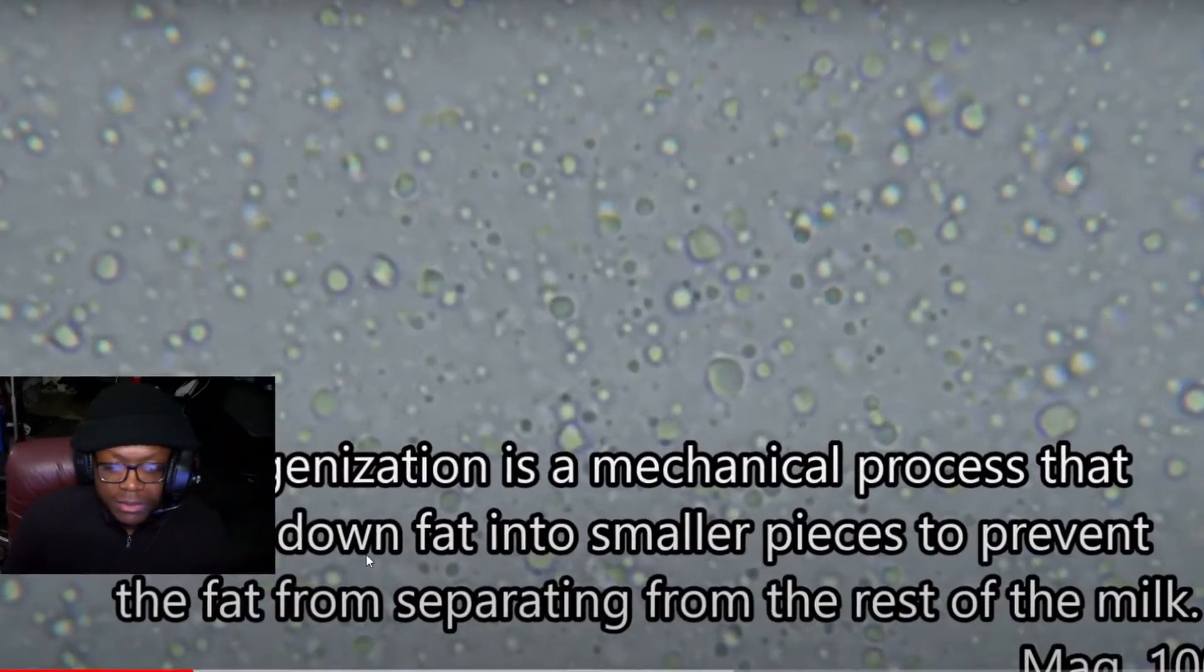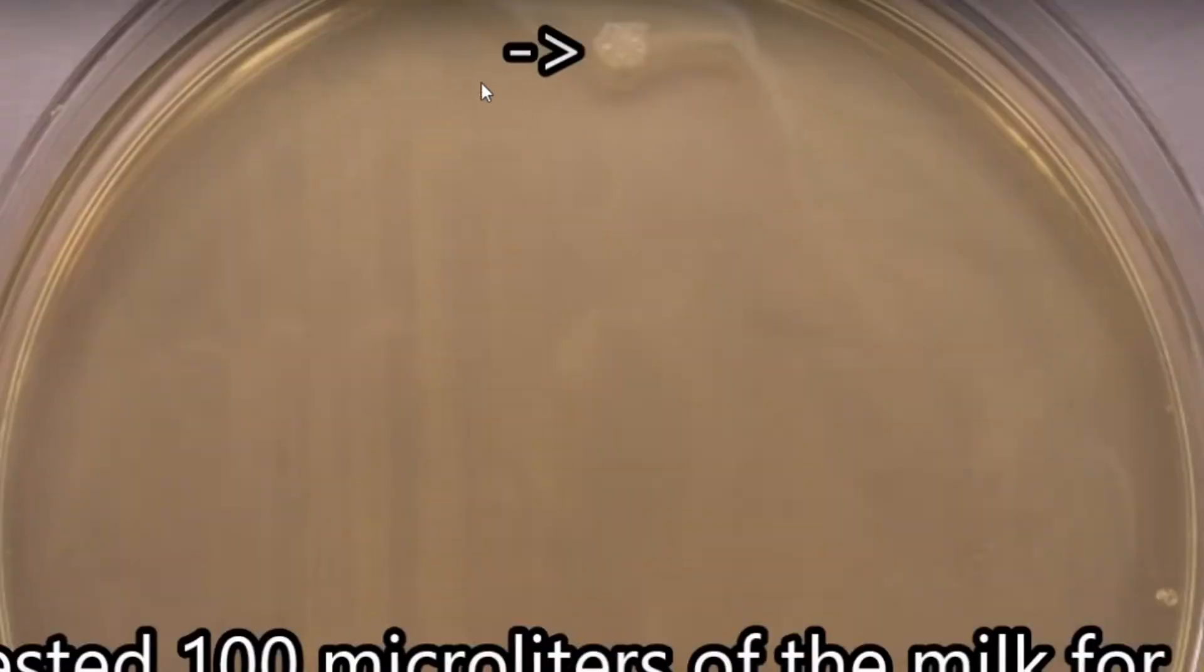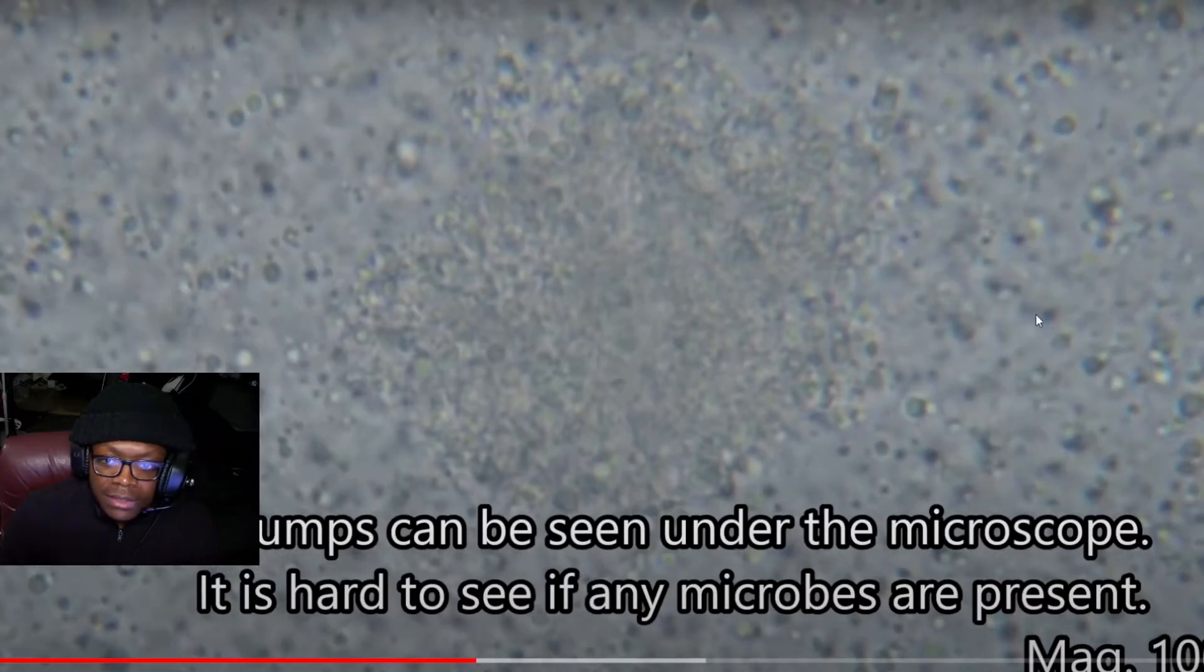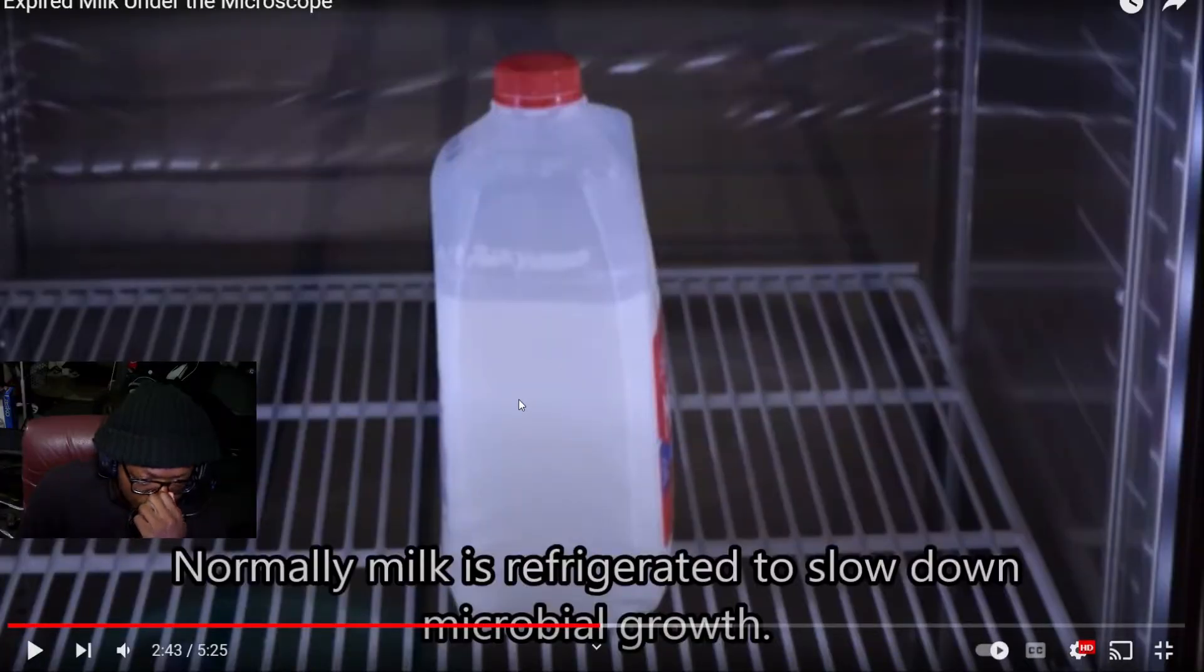Now this is the milk on a petri dish and there's some bacteria. But isn't bacteria present in just about everything? Now this is the expired milk, the curds. We still see the globules and we have a lump of milk here. And look, now we have more bacteria. Refrigeration slows down microbial growth.